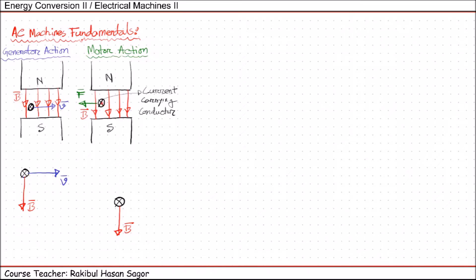Now if we describe the motor action: motor action means we are applying some current through a conducting wire, and this conductor is placed under a magnetic field. As an output we get force. The direction of the magnetic field is downward and the direction of the current is into the page. So if we apply Fleming's left-hand rule, the direction of the force experienced by this wire will be from right to left.